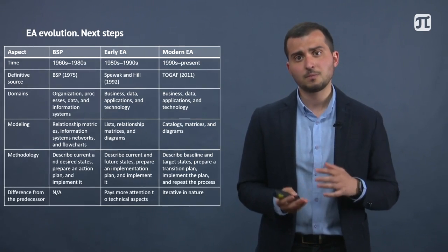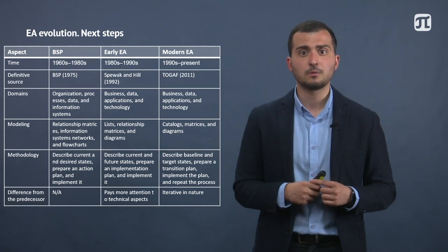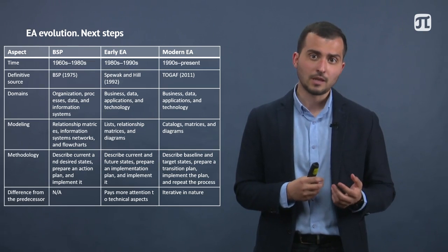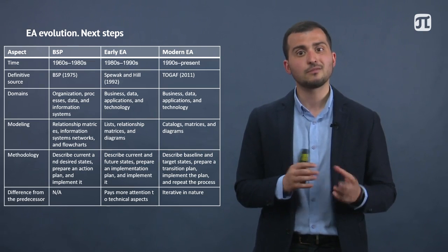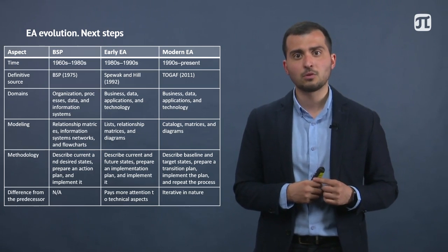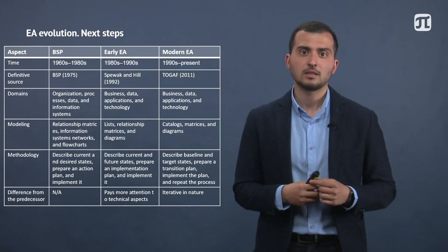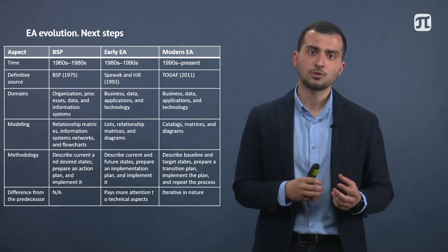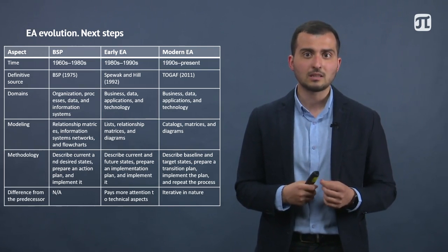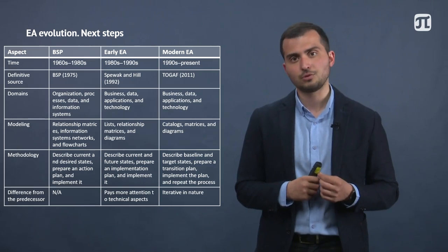BSP evolved into the early enterprise architecture approaches, which were proposed by Spivak and Hill. They paid more attention to technical aspects of EA, but already started describing current and future states and planning the implementation plan. Later, modern approaches appeared, and one of the most widespread is TOGAF. The standard focuses on baseline and target architecture covering different domains and being iterative in nature. Its ultimate goal is to plan and manage corporate development in business and technology domains.